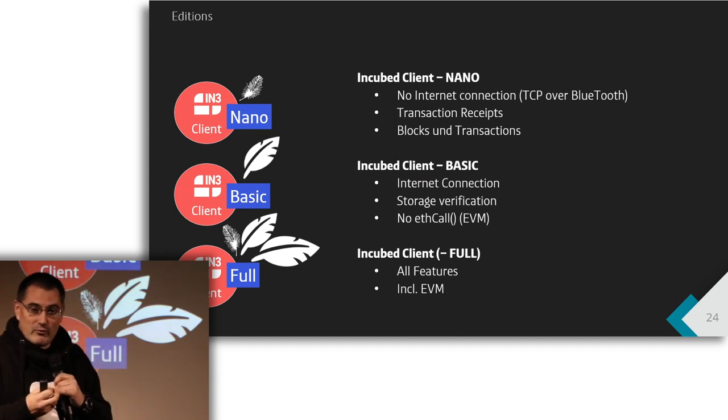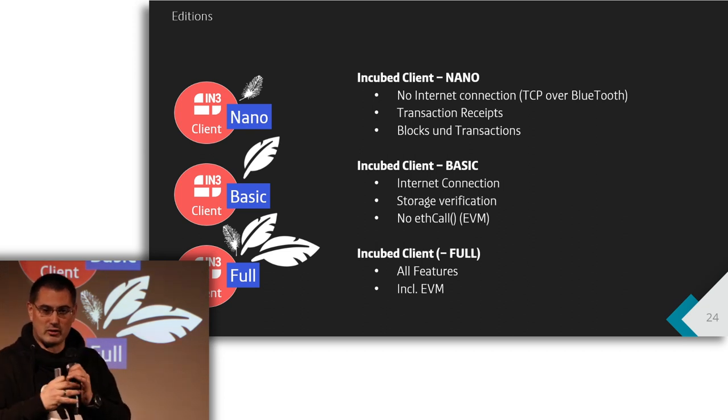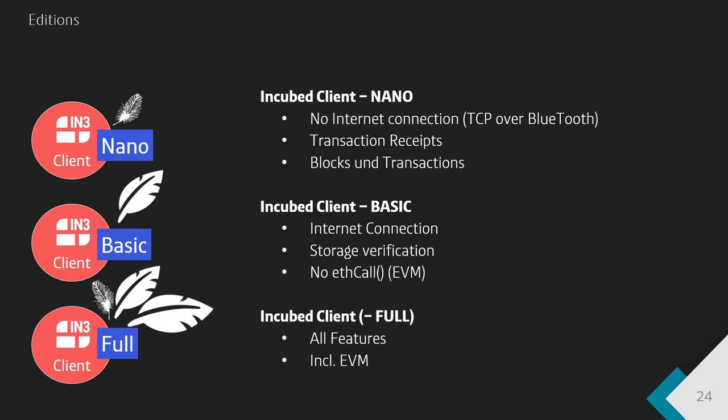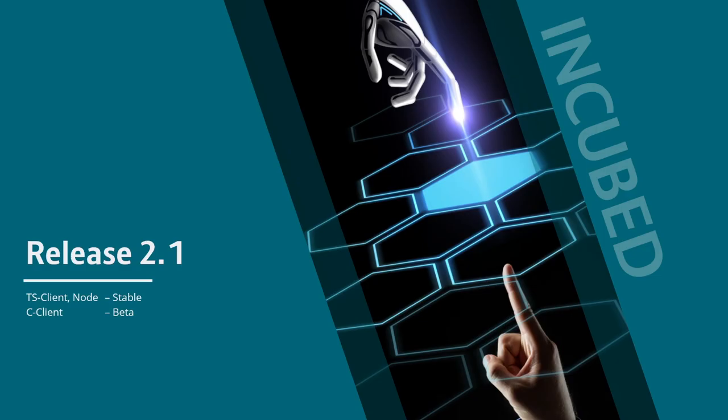We have several versions. There is the smallest one — the nano version — which is small enough to run on a real microcontroller. If you see this black chip here in the middle, this microcontroller is enough to run this client completely. Then we have the basic version which can interact with state, and also the full version which can do interactions with the EVM. We have a complete EVM included in this protocol.